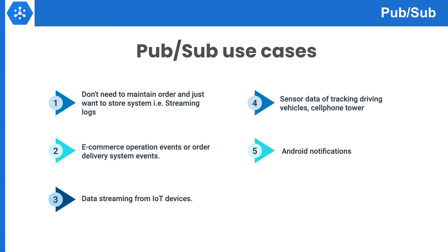Next we will talk about some of the perfect use cases for PubSub. We can use PubSub where we don't need to maintain order. For example, if you are using a third-party service and want to send system logs to the Google Cloud platform, then PubSub is the perfect solution. Order delivery services can use PubSub to store all operational events, and Google has great products like Dataflow and BigQuery to perform analysis on terabytes of data in seconds. PubSub can also be used for data streaming from IoT devices — sensor events from cell phone towers and driving vehicle tracking devices can directly stream data into PubSub. PubSub can also be useful for Android notifications.